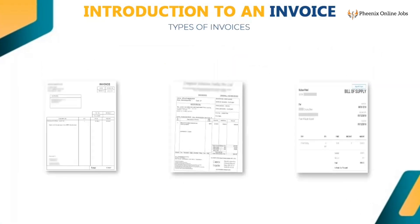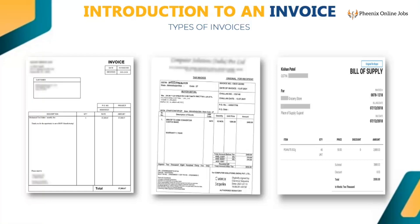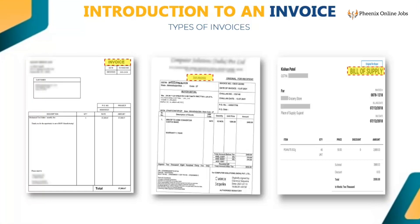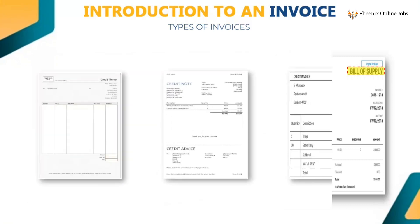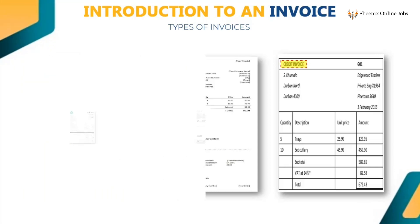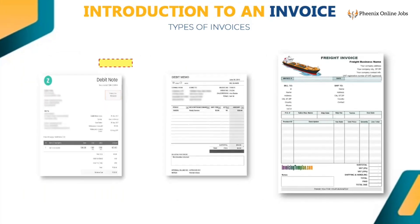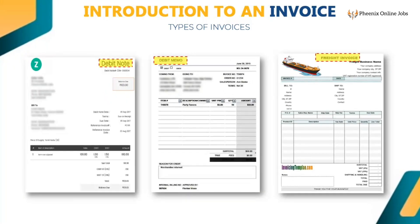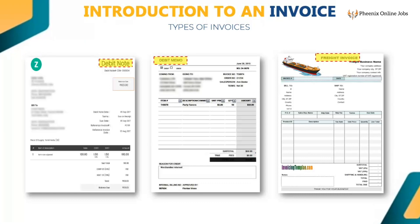These are examples of invoices. An invoice can be called invoice, tax invoice, or bill of supply. These are also invoices: credit memo, credit note, credit invoice, debit note, debit memos, and freight invoice. All the above examples are valid invoices to be processed.